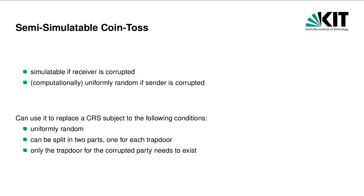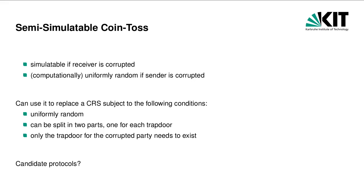If the coin toss is only semi-simulatable, a CRS needs to have additional properties if we want to replace it with a coin toss protocol. In a two-party protocol, we need a trapdoor for each party. As such, we must split the CRS into two parts, one for each trapdoor. We can then ensure that the part for the corrupted party is simulatable. As we can only guarantee that the other part of the CRS is uniformly random, the simulation may not rely on the trapdoor for that party to exist.